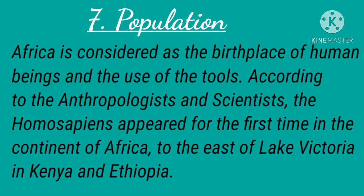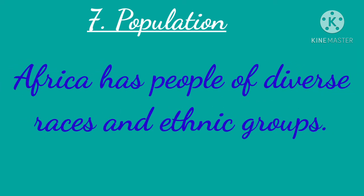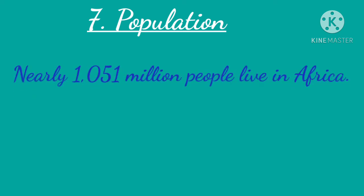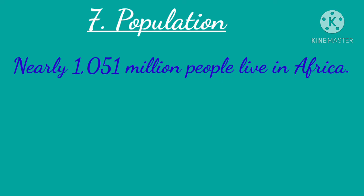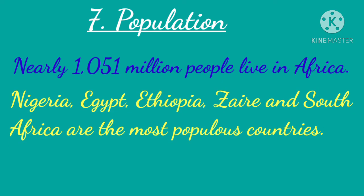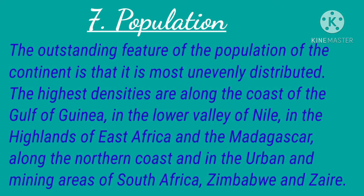Africa is considered the birthplace of human beings and the use of tools. According to anthropologists and scientists, Homo sapiens appeared for the first time in Africa, to the east of Lake Victoria in Kenya and Ethiopia. Africa has people of diverse races and ethnic groups; nearly 1,051 million people live in Africa. Nigeria, Egypt, Ethiopia, Zaire, and South Africa are the most populous countries. The population is most unevenly distributed; highest densities are along the coast of the Gulf of Guinea, the lower valley of the Nile, the highlands of east Africa, and Madagascar.